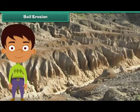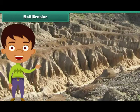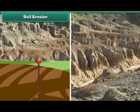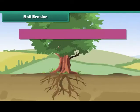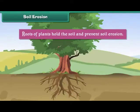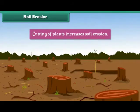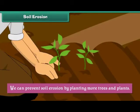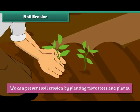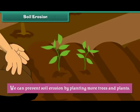Soil Erosion. Soil erosion is the removal and transfer of soil by wind and water. Roots of plants hold the soil and prevent soil erosion. Cutting of plants increases soil erosion. We can prevent soil erosion by planting more trees and plants.